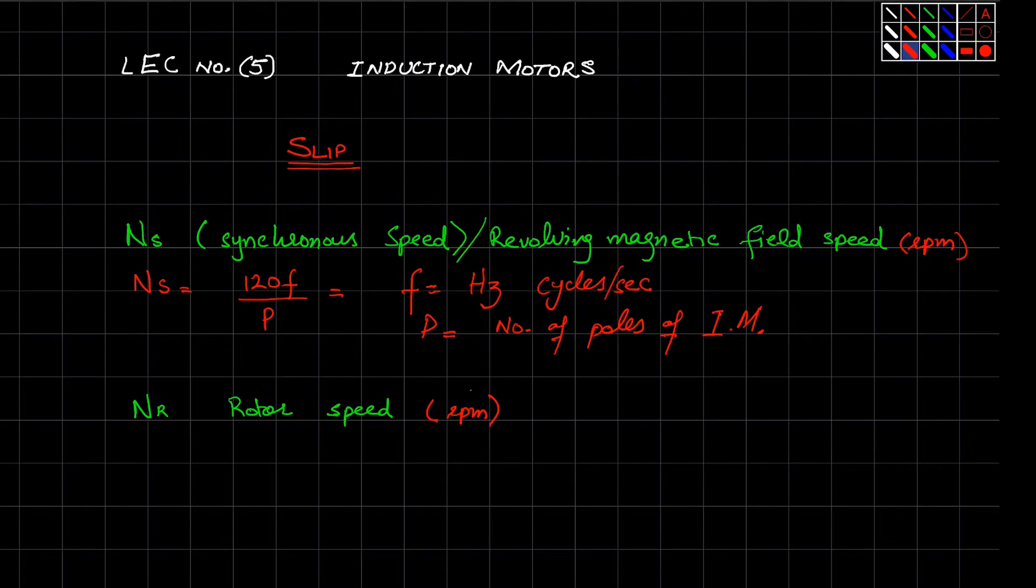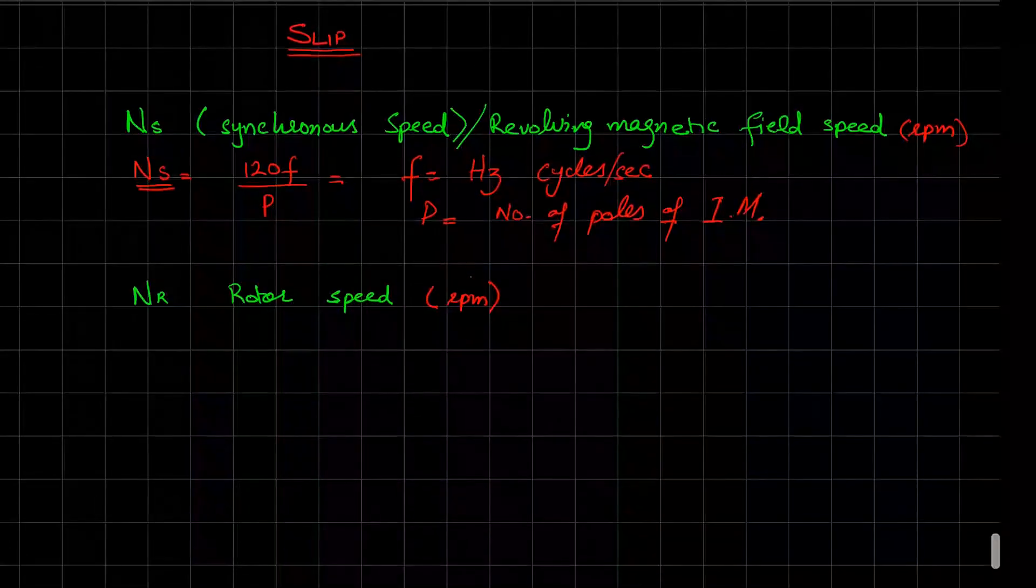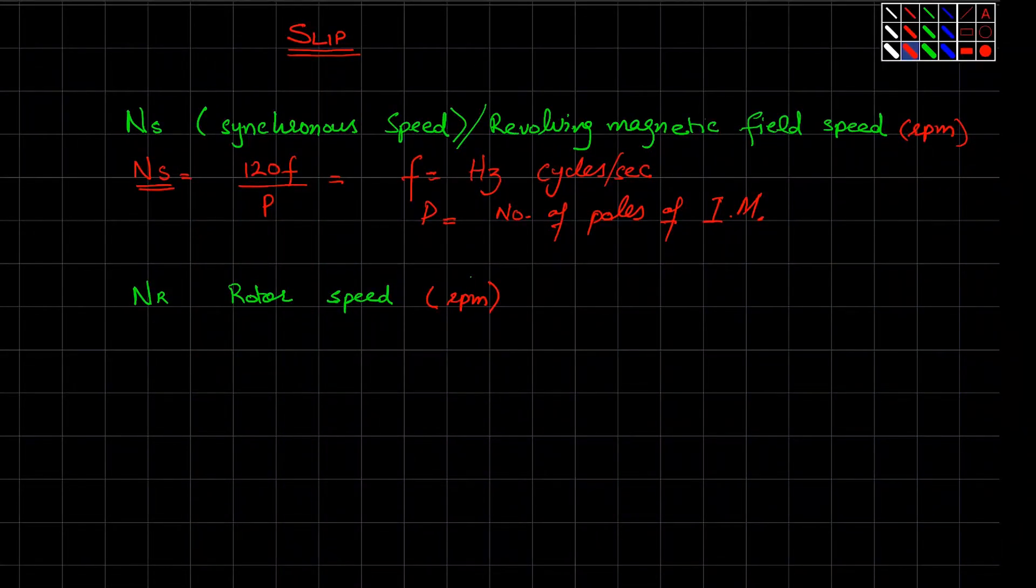Now we have another thing that is called the rotor speed. This is basically the speed of rotation of rotor, and this is the speed which is any motor's drive speed.